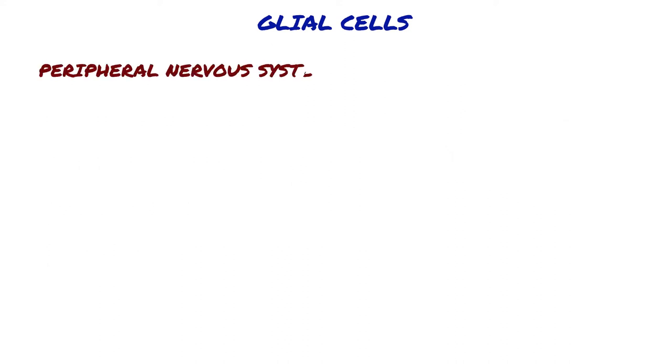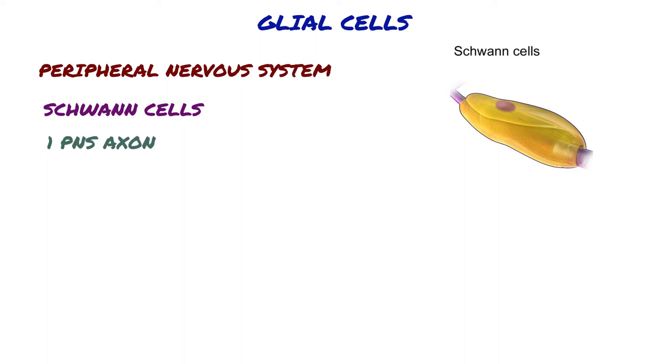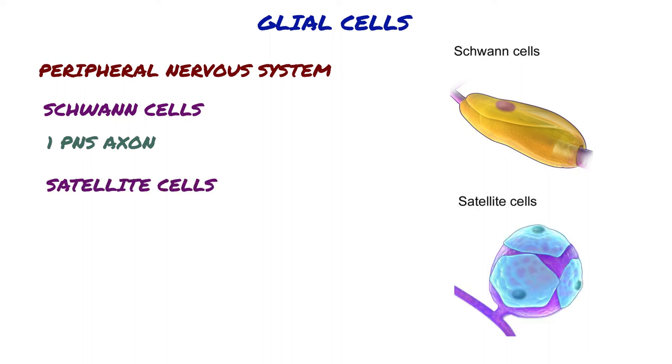In the peripheral nervous system, the cells that provide myelin are called Schwann cells. Each Schwann cell myelinates only one PNS axon. They also promote axonal regeneration and are derived from neural crest.